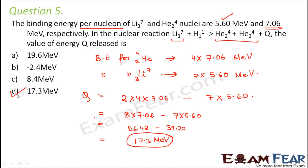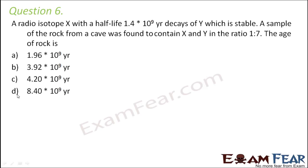So D would be the right option. Question number 6: A radio isotope X with a half-life 1.4 into 10 to the power 9 years decays to Y, which is stable. A sample of the rock from a cave was found to contain X and Y in the ratio 1 is to 7. The age of the rock is...